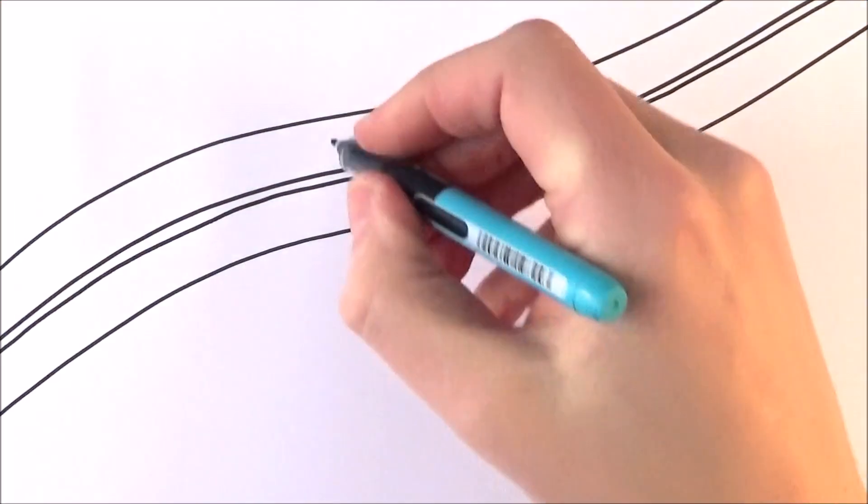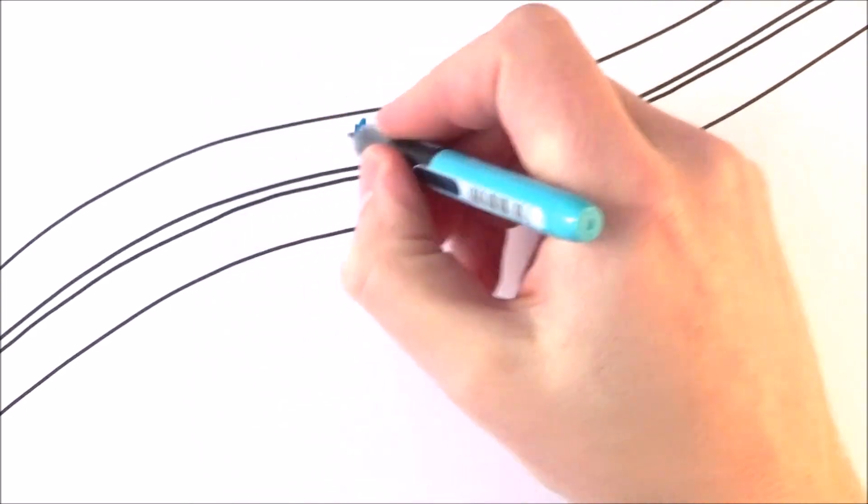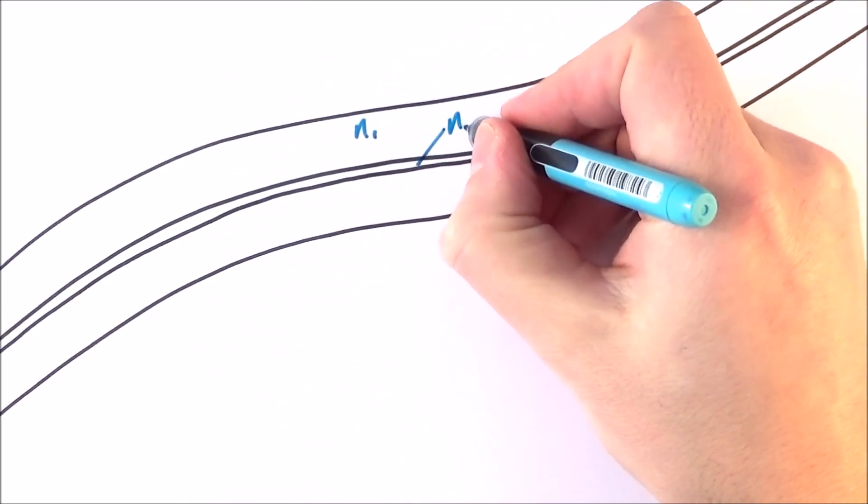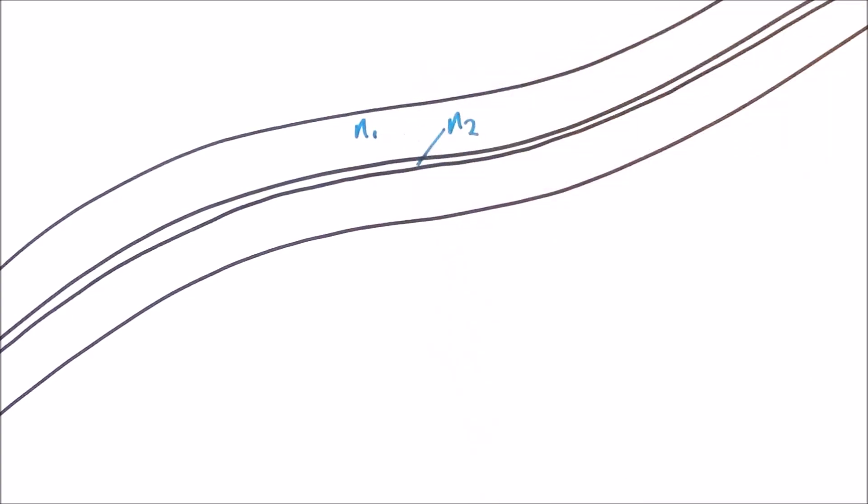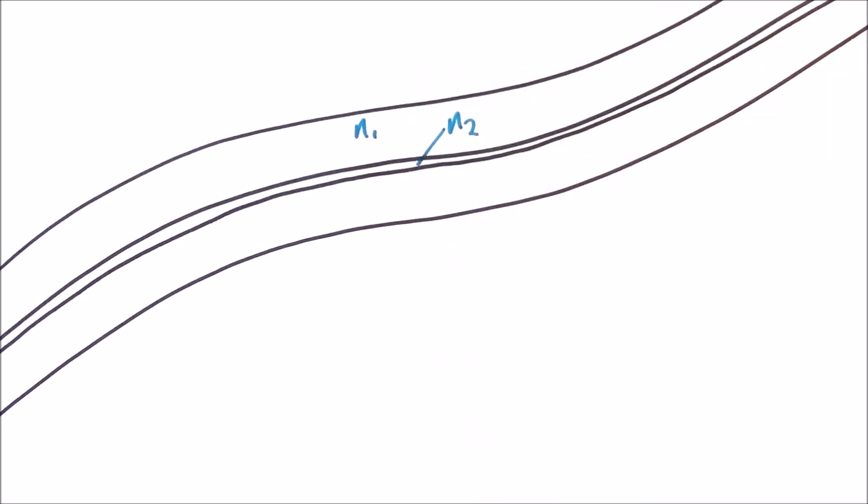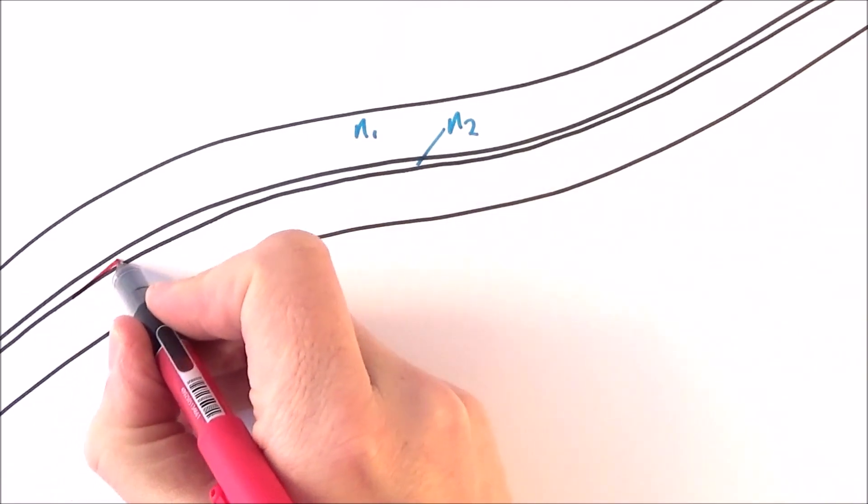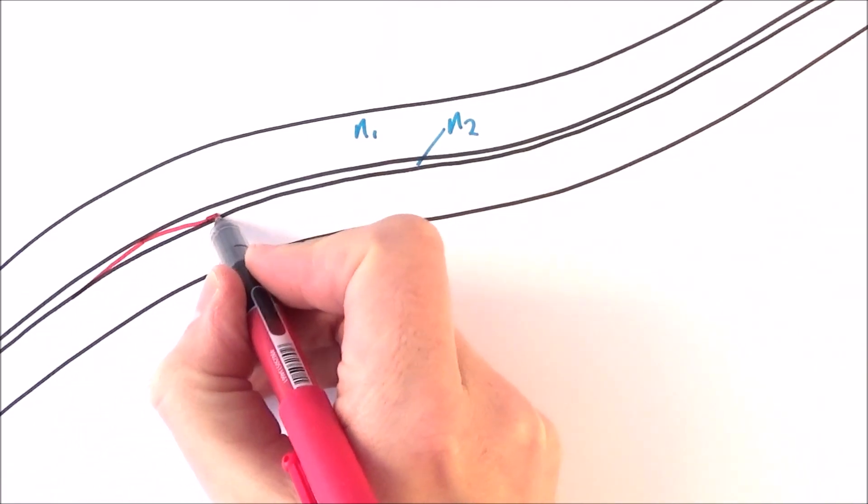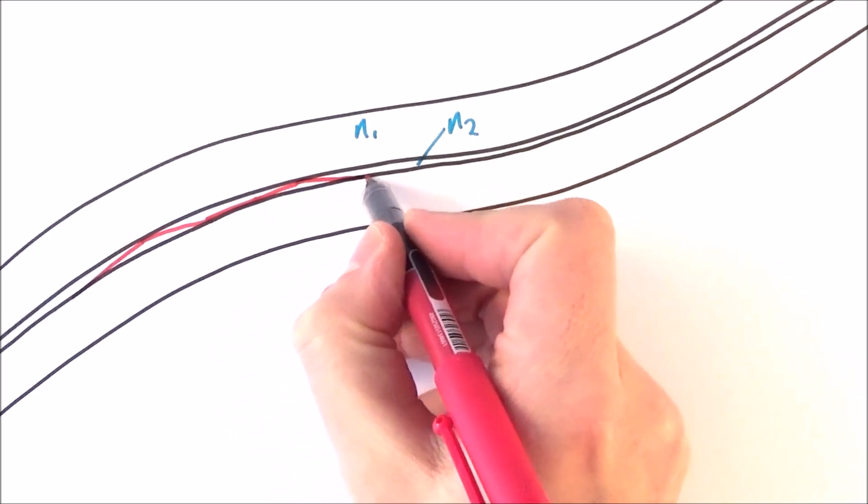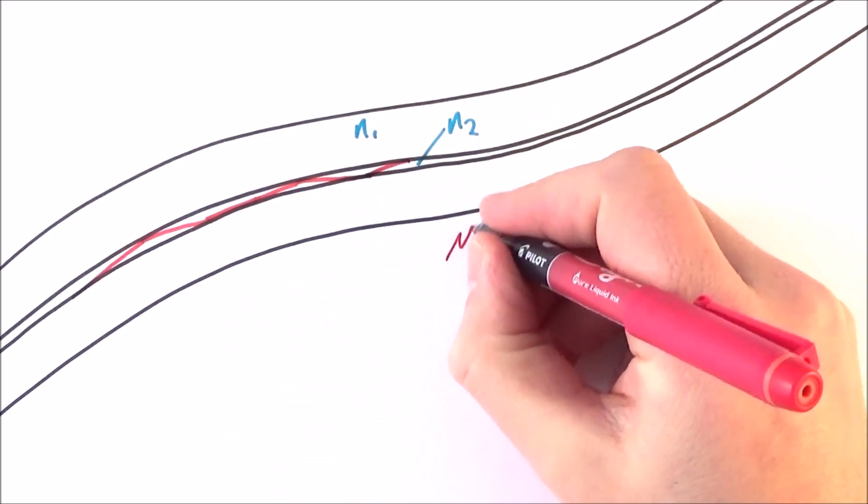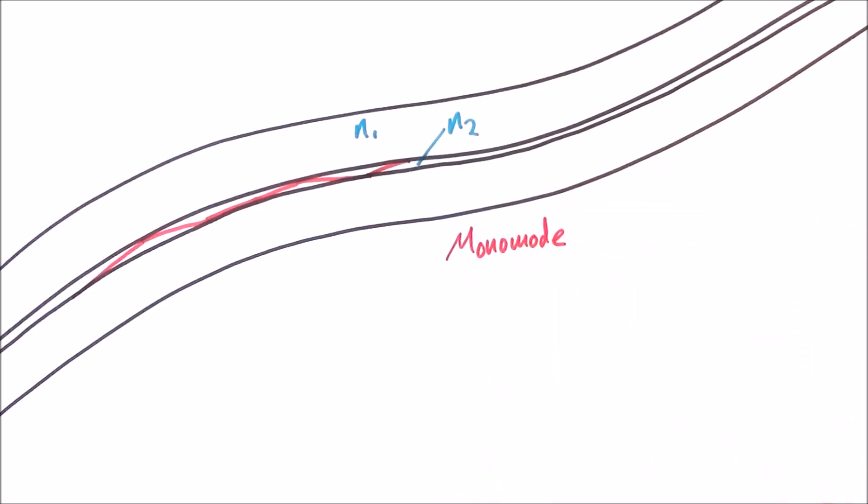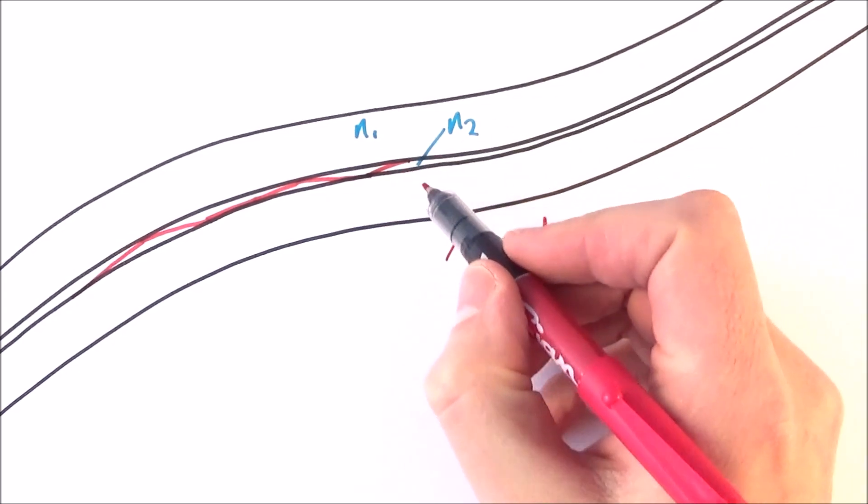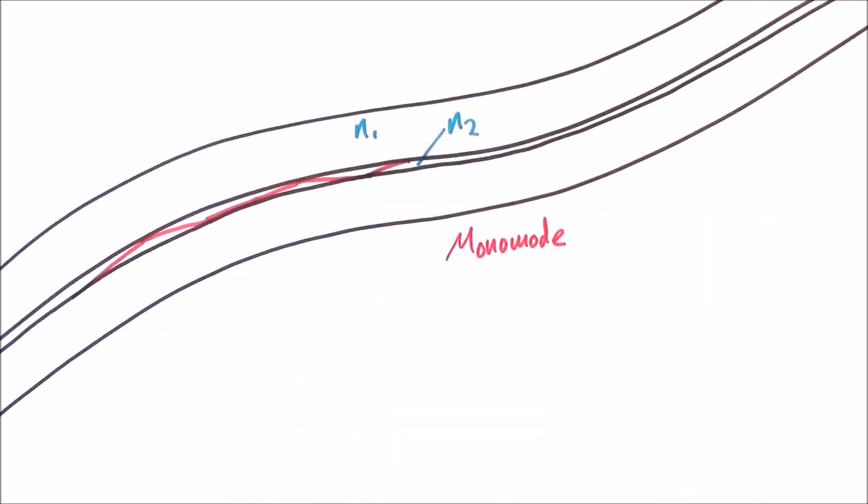This is another solution. What we can have is material where we have again the two different refractive indexes so maybe n1 in the outer layer and n2 on the inner but this time the inner core is a lot narrower so what this means is that the rays of light moving down it they have less chance to have a different path difference and therefore every ray of light moving along in what we call a monomode optical fibre every ray of light doesn't have the chance to spread out and take a different path length.